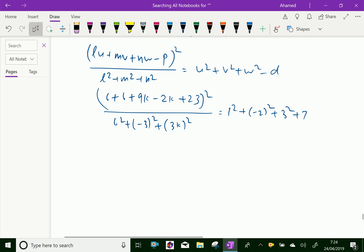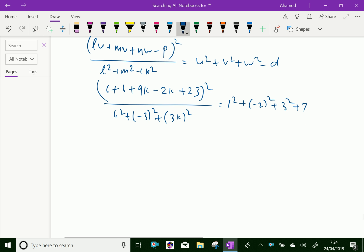Now, by simplifying we get, 35 + 7k² over 45 + 9k² equals 21.